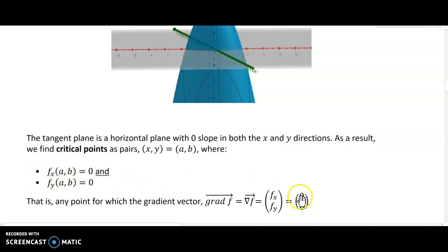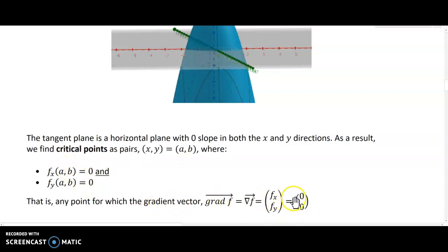Since the gradient vector consists of the two partial derivatives, finding critical points is equivalent to finding where the gradient vector equals the zero vector. In the next video we'll tackle some examples of how to use this.